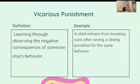Vicarious punishment. This is learning through observing the negative consequences of someone else's behavior. So for example, a child refrains from breaking rules after seeing a sibling punished for the same behavior.